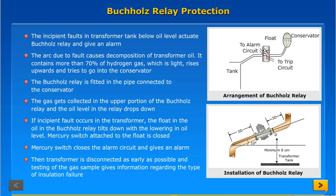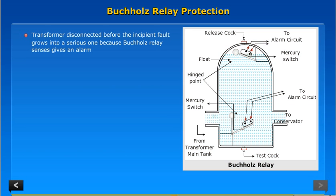The transformer is disconnected as early as possible and testing of the gas sample gives information regarding the type of insulation failure. The transformer is disconnected before the incipient fault grows into a serious one, because the Buchholz relay sensor gives an alarm.